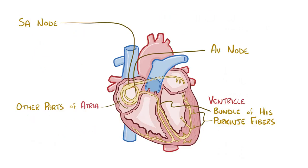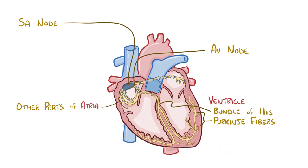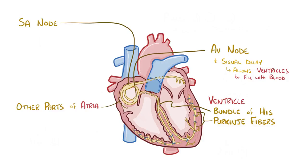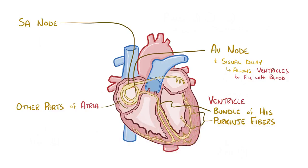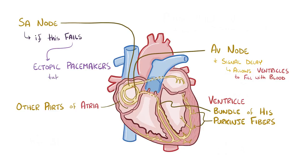As a quick recap: pacemaker cells in the SA node send a depolarization wave through the atria so they contract together, as well as to the AV node where there's a delay so the ventricles can fill with blood. From there, the depolarization wave races down the bundle of His and Purkinje fibers and spreads through both ventricles, allowing them to contract together. If the SA node fails, other pacemaker cells in the atria, AV junction, and ventricles are ready to step in and take over.